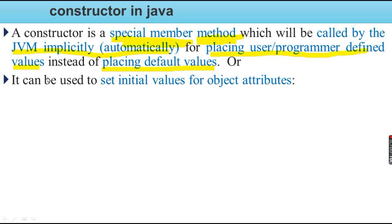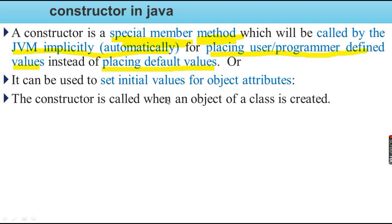The constructors can be used to set initial values for object attributes. The constructor is called when an object of a class is created, using the new operator followed by the class name.